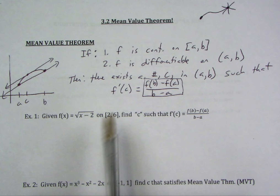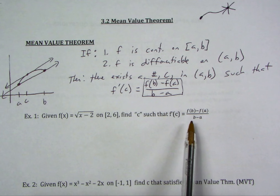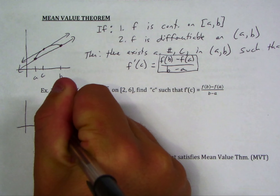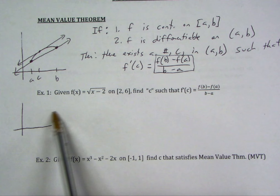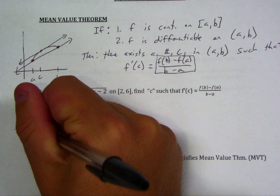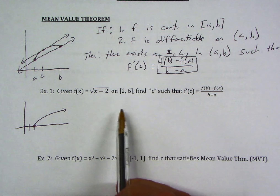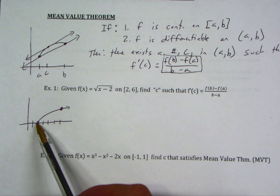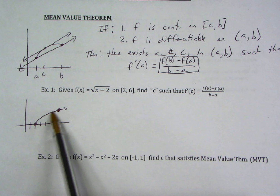Example 1: given the function square root of x minus 2 on the interval 2 to 6, find C such that f prime of C equals f of B minus f of A over B minus A. First, let's think about why there has to be a C value. The square root of x minus 2 starts at the origin shifted right two units — it's continuous on the closed interval and differentiable on the open interval, nice and smooth. We're only focused on the interval from 2 to 6.